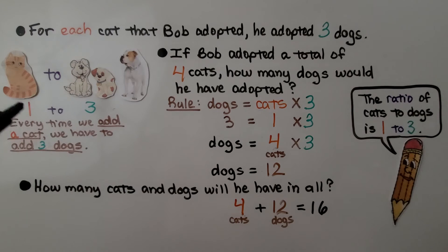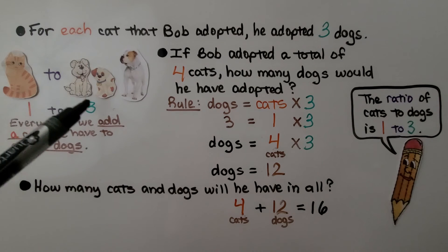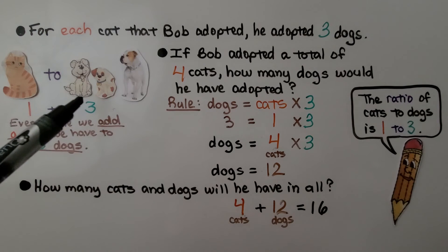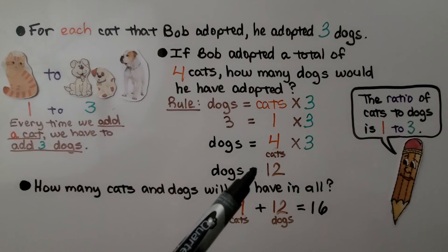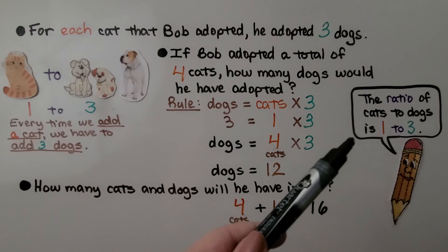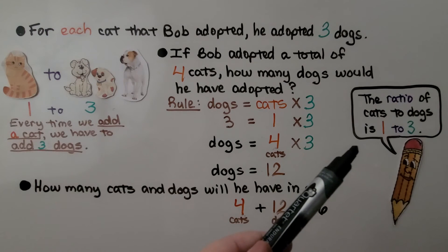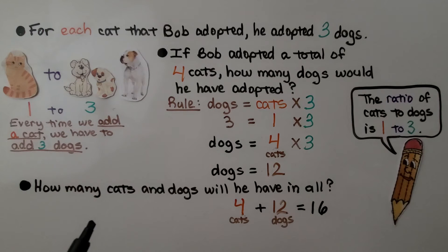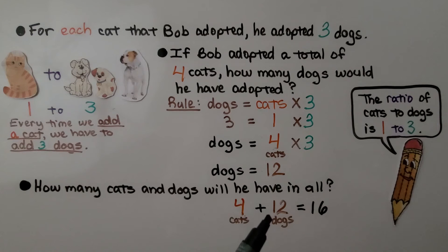Every time we add a cat, we're adding three dogs. So if there are four cats, we can just multiply by three and get 12 dogs. The ratio of cats to dogs is one to three. He had four cats and 12 dogs — that's 16 animals in all.